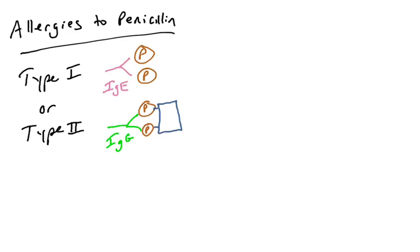For type 2 hypersensitivities or type 2 allergic reactions, that involves generating IgG antibody isotypes to the allergen and recognizing the allergen that is attached to the surface of cells. So usually type 2 hypersensitivities involve the antibody recognizing cell surface molecules, and we'll see why this is bad in a minute.